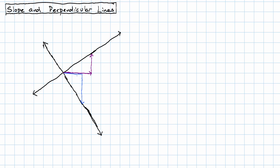Now, in my example, these lines have nice slopes. This first line has slope up 2, right 3, so 2/3. And the perpendicular line has slope down 3, right 2, so negative 3/2.